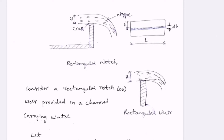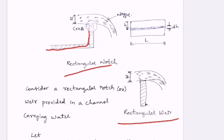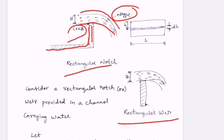Coming to the discharge derivation, we have to consider a rectangular notch or rectangular weir as shown in the video. This is a canal and this is a notch — the sheet of water traveling over the crest is called the nappe. The height of that sheet of water traveling from the crest is denoted as capital H, as shown in the figure. The same H is called the height of water over the crest.